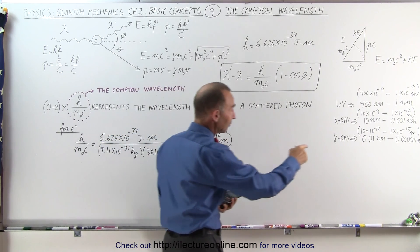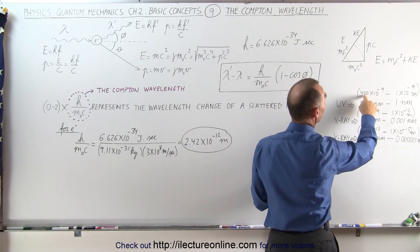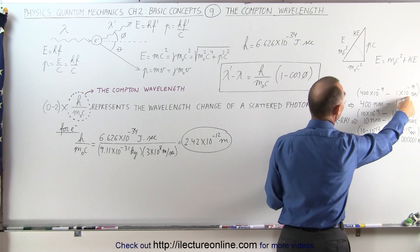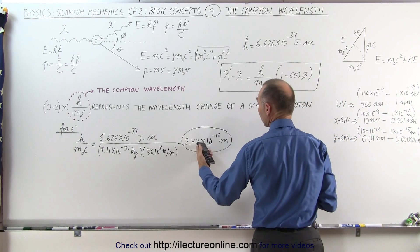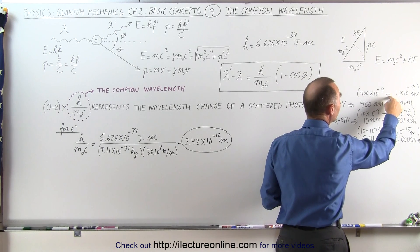Now notice, compared to the wavelength of UV radiation, which varies anywhere from about 400 times 10 to the minus 9 to 1 times 10 to the minus 9, you would have a very hard time measuring this small of a change relative to UV photon.